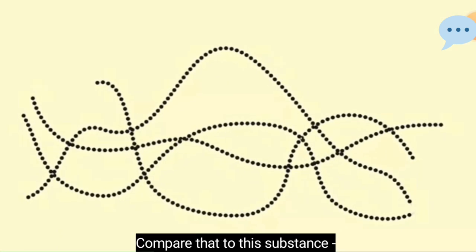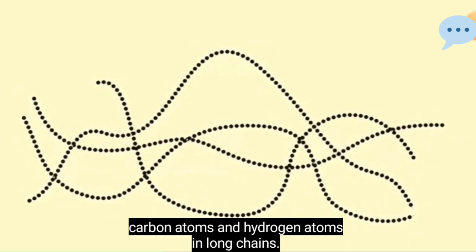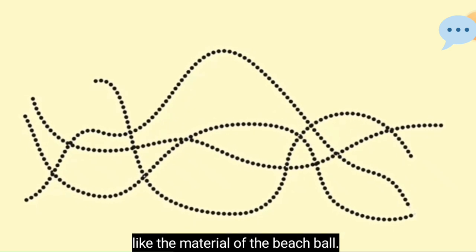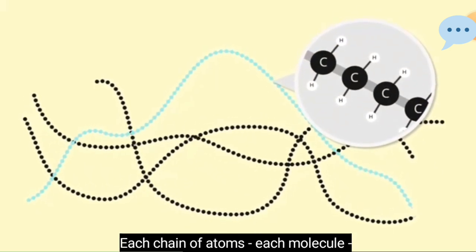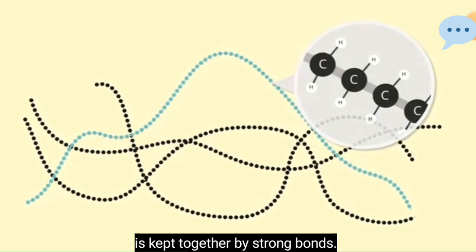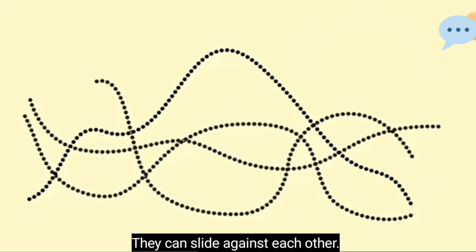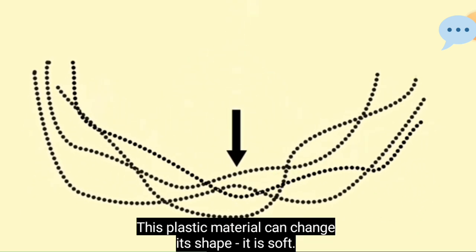Compare that to this substance, carbon atoms and hydrogen atoms in long chains. The substance we're looking at now is a kind of plastic, like the material of the beach ball. Each chain of atoms, each molecule, is kept together by strong bonds. But the molecules aren't attached to each other as firmly. They can slide against each other. This plastic material can change its shape. It is soft.